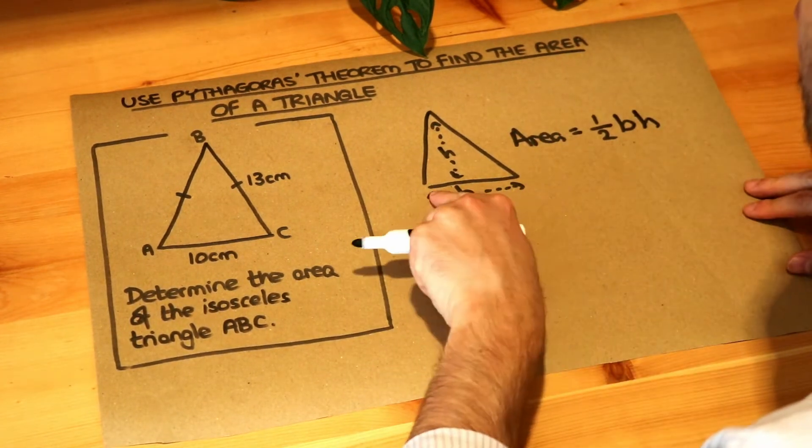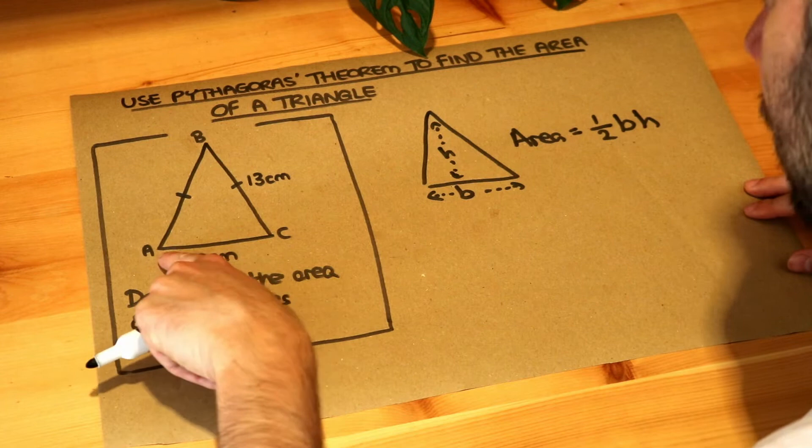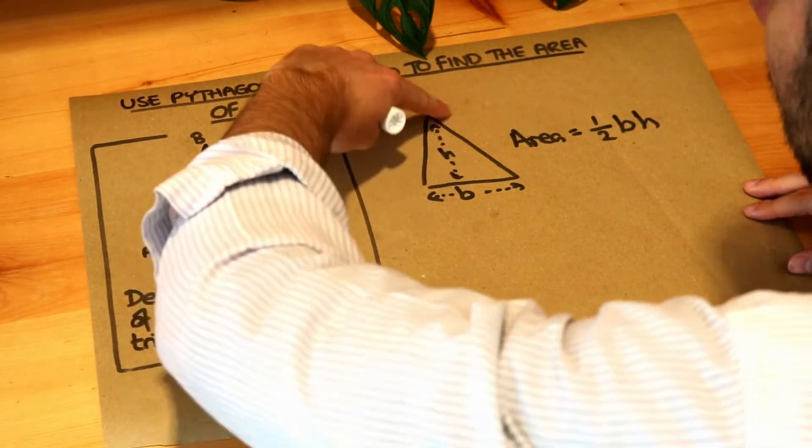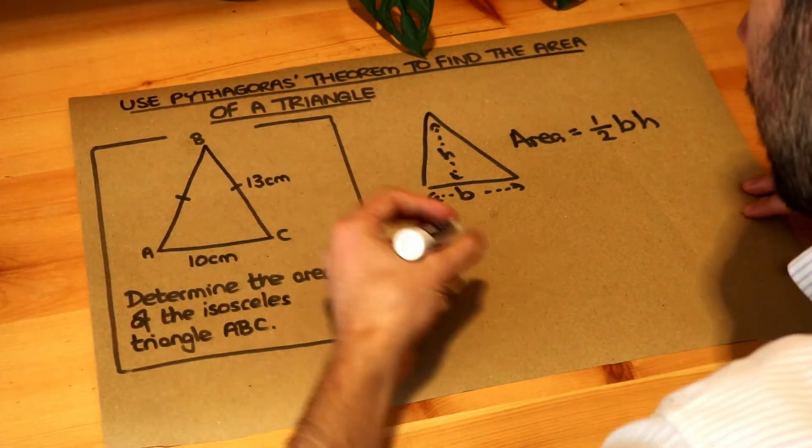We need to work out the base of the triangle, which we can see is 10, but we also need the perpendicular height which we don't know.